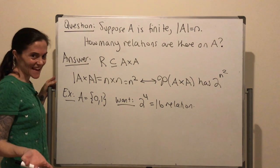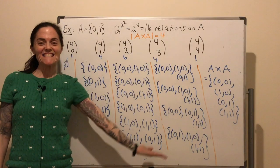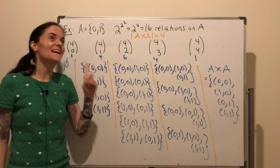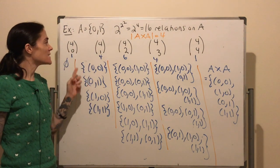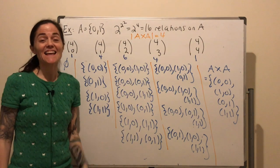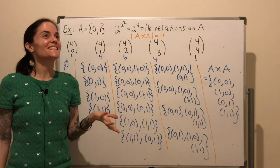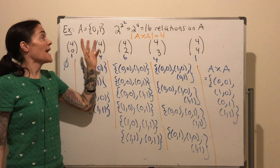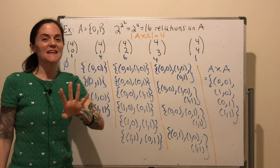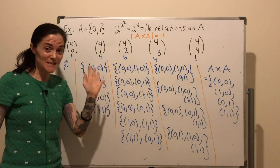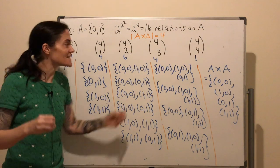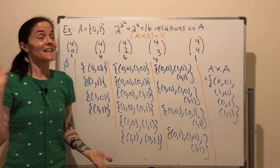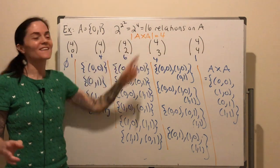Let's see if we can verify this when A is {0, 1}, which has cardinality 2. We should have 2 to the 2-squared, which is 16 relations. That's a lot of relations on a 2-element set. Let's see if we can write all of these down. A cross A has 2 times 2 equals 4 elements, and the number of subsets of A cross A is 2 to the 4, or 16.